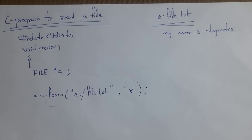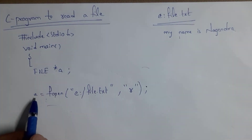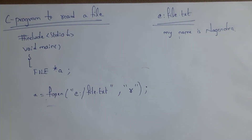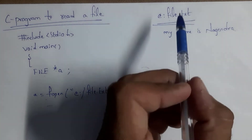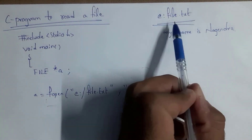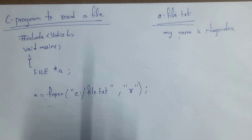This is another program to read a file. Reading a file means displaying whatever text is present inside the file on the output screen. In this example program, I write FILE *A, where star represents the pointer variable. Then A = fopen — using fopen we can open an existing file. Now I want to open the file named file.txt, which contains 'my name is Nagendra'.